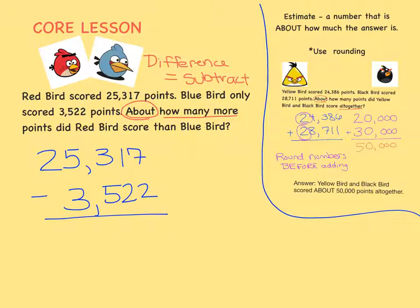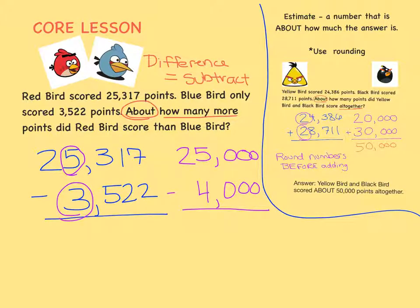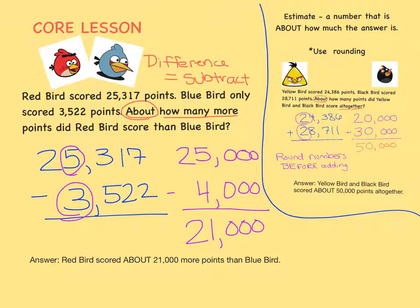25,317 rounds to 25,000. 3,522 rounds to 4,000. 25,000 minus 4,000 equals 21,000. Redbird scored about 21,000 more points than Bluebird.